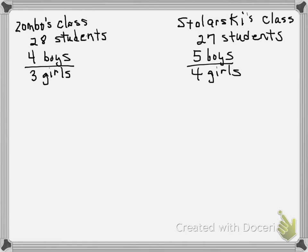Okay, so let's organize our information this way. Zombo's class has 28 students and the ratio of boys to girls is 4 to 3. In Stolarski's class there are 27 students and the ratio of boys to girls is 5 to 4, so there are 5 boys to every 4 girls.